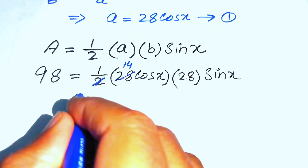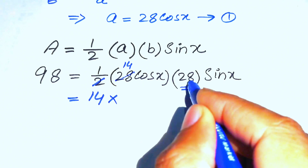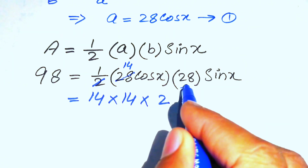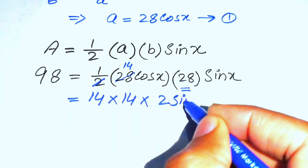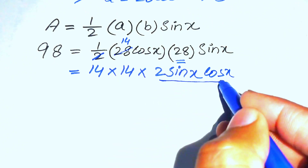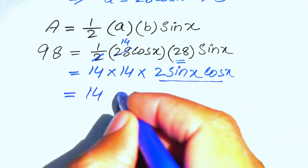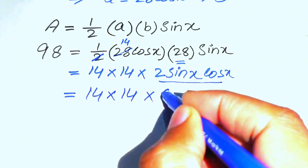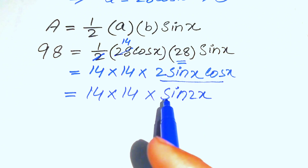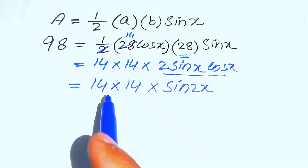Simplifying, the ½ and one factor combine to give 14, so we get 98 = 14 · 28 · sin(x)·cos(x), which equals 14 · 14 · 2·sin(x)·cos(x). We now apply the double angle identity: 2·sin(x)·cos(x) = sin(2x), so the equation becomes 98 = 14 · 14 · sin(2x).